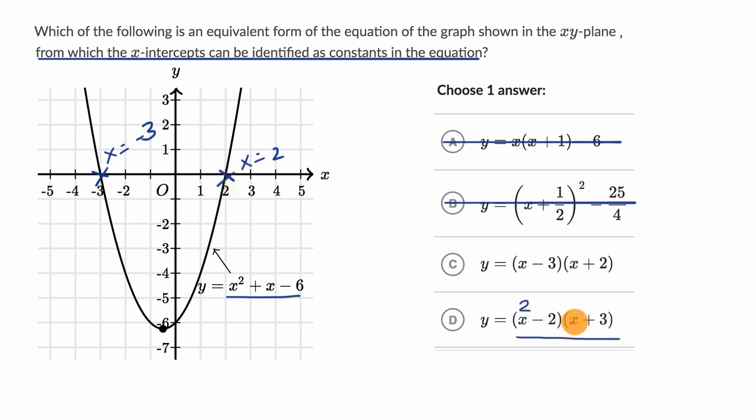If you put in a negative three here, negative three plus three is going to be zero. So this is actually the choice that we are looking at. Once you factor this quadratic in a form like this,